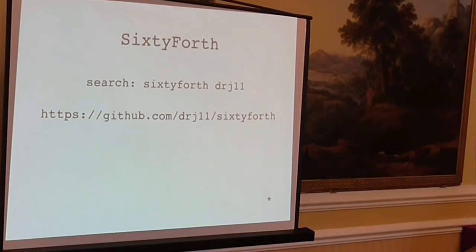This is what I've built so far. It's called 64th. And if you search for 64th, depending on which search engine you use, you either end up suggesting that you've misspelled the name of a very short musical note, or you find somebody else's fork. So if you're searching for it, put the DRJLL in. Find my stuff on GitHub. Those who are really good at typing, there's the URL.